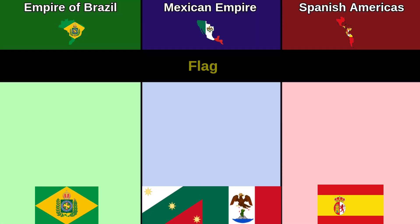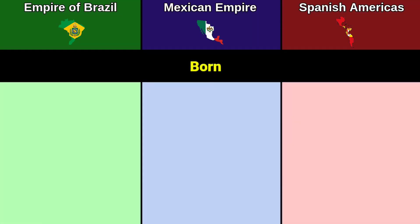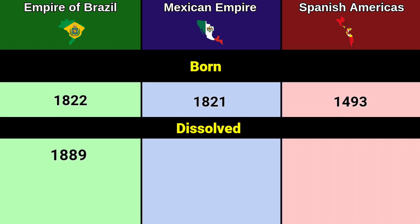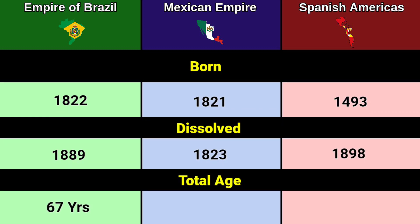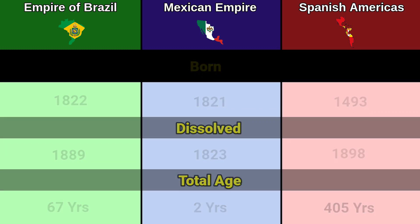Flag. Born: 1822, 1821, 1493. Dissolved: 1889, 1823, 1898. Total age: 67 years, 2 years, 405 years.